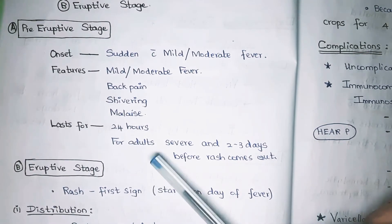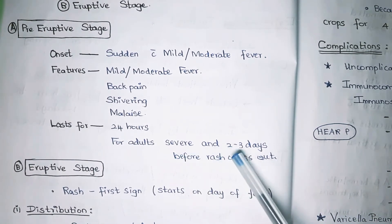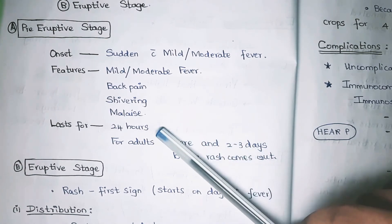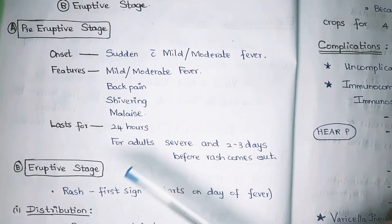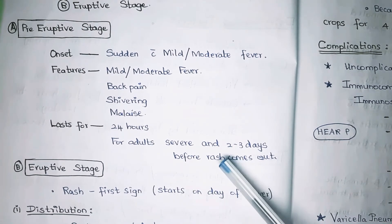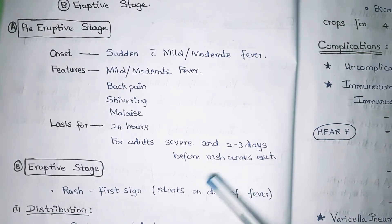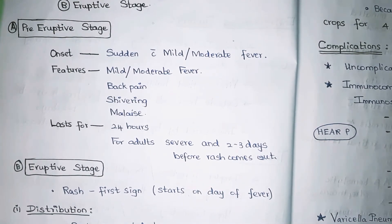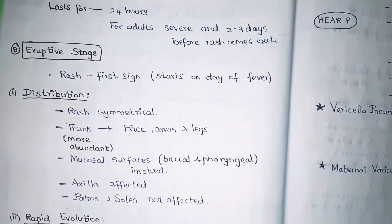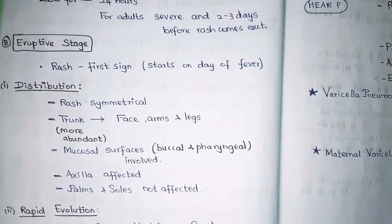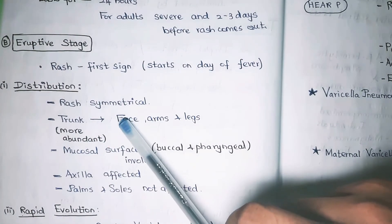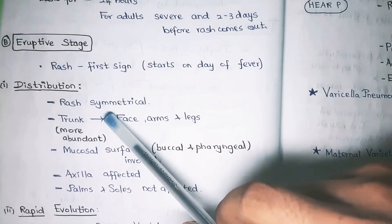In adults, the pre-eruptive stage can appear two to three days before the rash, similar to smallpox. In children, rash and fever occur simultaneously. In the eruptive stage, the rash is the first sign and starts on the day of fever. The rash is distributed symmetrically on both sides of the body.